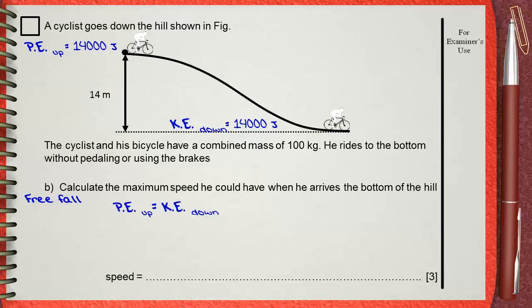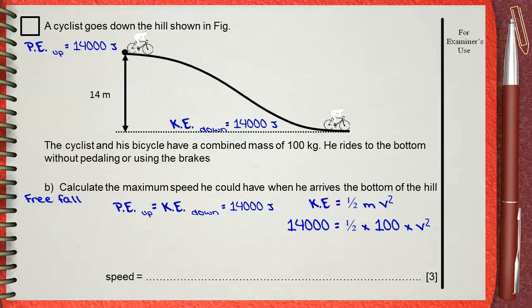Because anything that falls freely, its potential energy is completely converted to kinetic energy, and there is no loss as heat or sound. So both quantities equal 14,000 joules. Kinetic energy equals half m v squared. That means 14,000 equals half times 100 times v squared. We need v squared to find the speed v. Doing our calculations, we find that v squared equals 280.